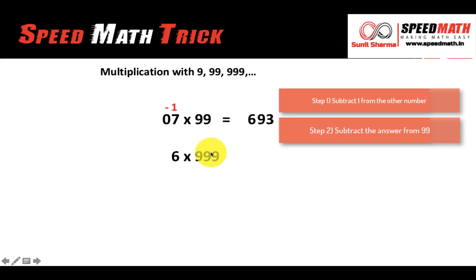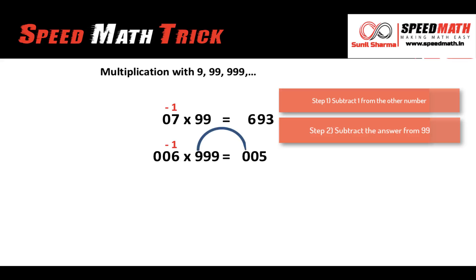Another example: 6 multiplied by 999. There are three nines and only one digit in 6, so we place two zeros before it to make 006. Step 1: subtract 1 from 006 to get 005. Step 2: subtract 005 from 999 — 9 minus 0 is 9, 9 minus 0 is 9, and 9 minus 5 is 4. So 6 times 999 equals 5994.